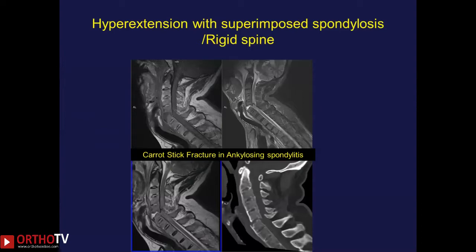A peculiar injury seen especially in fused spines, such as ankylosing spondylitis and DISH, is the hyperextension injury. The spine acts like a carrot and breaks into two parts — more akin to a femoral shaft fracture. The two long segments act like the shaft of the femur, and there is a break similar to a femoral shaft fracture. These are highly unstable injuries which should be surgically treated.